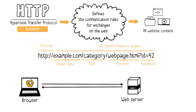A URL provides the following information: the protocol — HTTP in this case — indicating how to access the resource; the domain name, which is the server's address where the resource is hosted; and the path to the resource on the server, meaning the specific file name we're looking for.